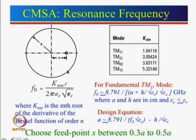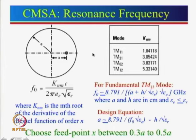As with rectangular microstrip antenna, the substrate parameters will be εr, substrate thickness h, and tan δ = 0.001 for a low-loss substrate. The resonance frequency of the circular microstrip antenna can be obtained using this particular formula.